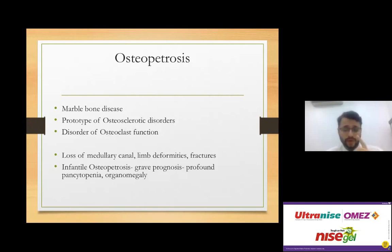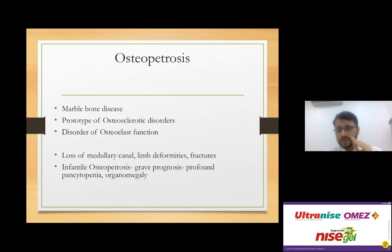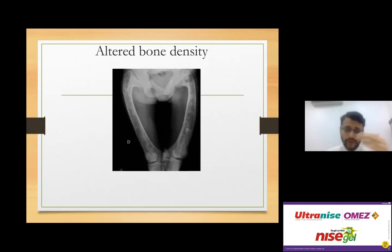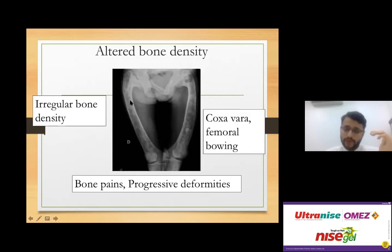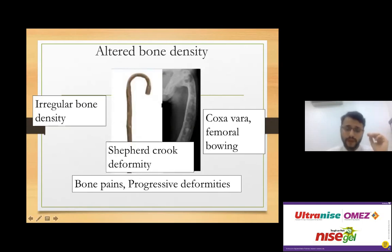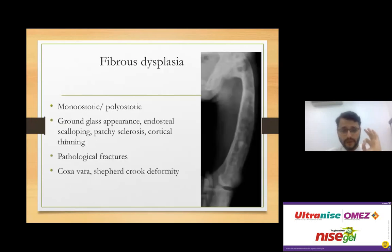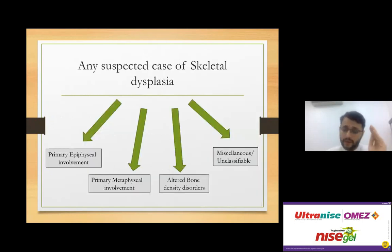Infantile osteopetrosis has a grave prognosis — very little marrow to form WBCs, leading to profound pancytopenia and organomegaly; children typically do not survive beyond the first decade. Fibrous dysplasia presents with patches of osteosclerosis and osteopenia, bone pain, progressive deformities, and the characteristic shepherd's crook deformity of the proximal femur. It can be monostotic or polyostotic, with a ground-glass appearance and endosteal scalloping. Treatment is bisphosphonates medically and deformity correction surgically.